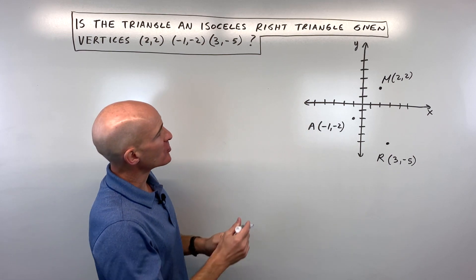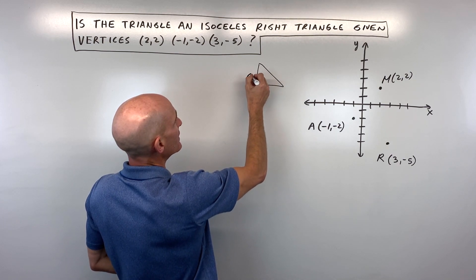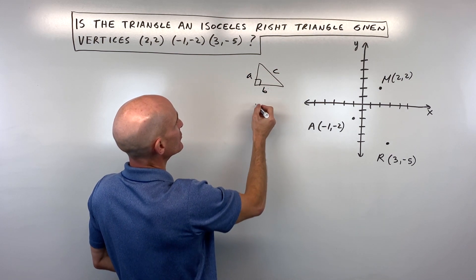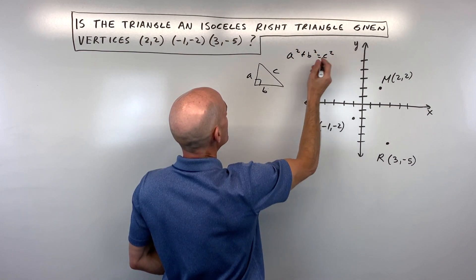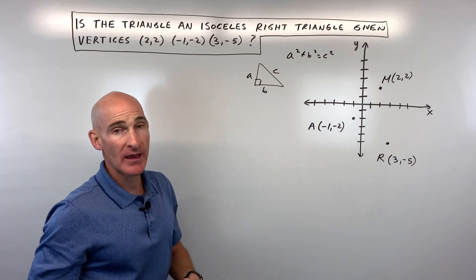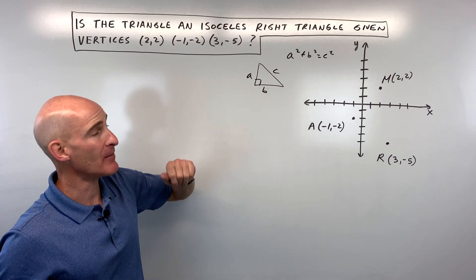We also know that if it's a right triangle, it will satisfy the Pythagorean theorem, meaning a² + b² = c². So we're trying to figure out: are two of the sides congruent (that makes it isosceles) and does it satisfy the Pythagorean theorem (that makes it a right triangle)?